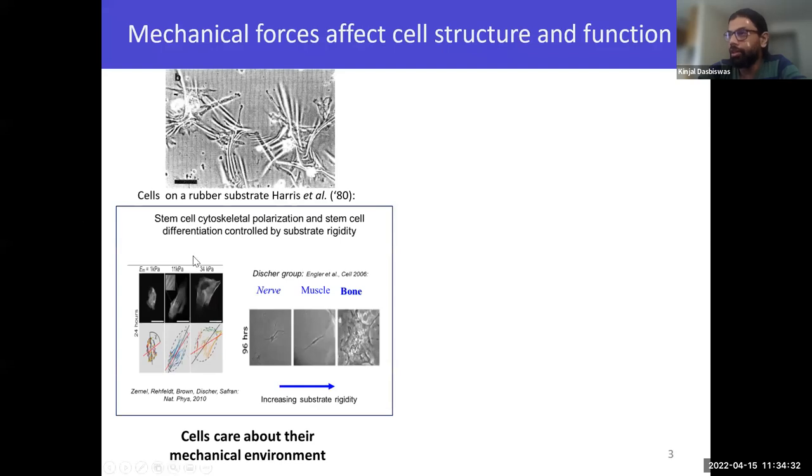This field sort of exploded around two decades ago with several experiments. One of the key experiments was this one by Engler and Disher, who showed that by culturing stem cells on top of soft substrates and purely by varying the mechanical properties, specifically the rigidity of the substrate, you could affect the cell fate. Here it's purely through mechanical means. What they showed was that on soft substrates, the cells tend to become neurons, on hard substrates, they become bone cells, and muscles on substrates of intermediate stiffness. This is biologically very remarkable, and it led to a host of other experiments.